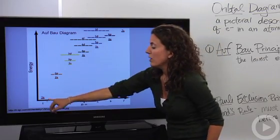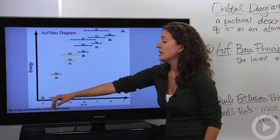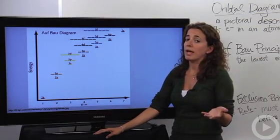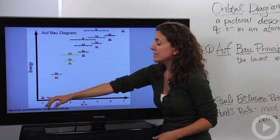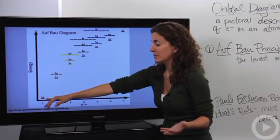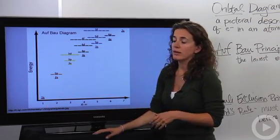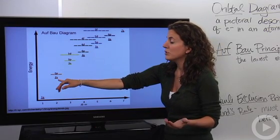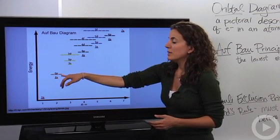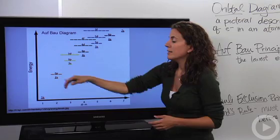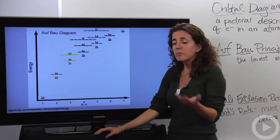Okay, so down here we have the 1s orbital. The one dash indicates that there's one orbital within the 1s sub-level, which makes sense that it's the lowest energy. It's the first principle energy level. You jump up a little bit in energy, and we get the 2s orbital. Then we get the 2p sub-level. Notice that there's three orbitals within the 2p sub-level.